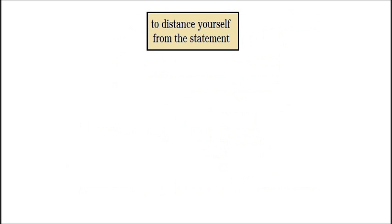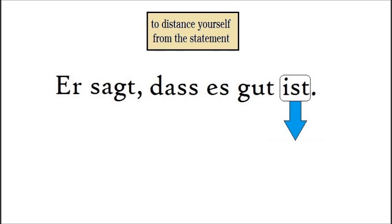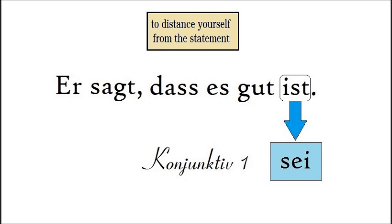Now if you want to distance yourself from this statement, that is when you use the Konjunktiv 1. You do it by taking the verb of that statement and turning it into the Konjunktiv 1 form. For example: 'Er sagt, dass es gut sei.'